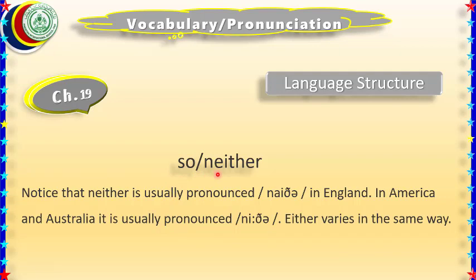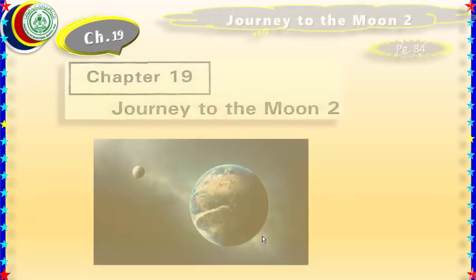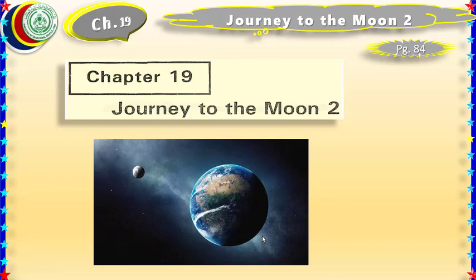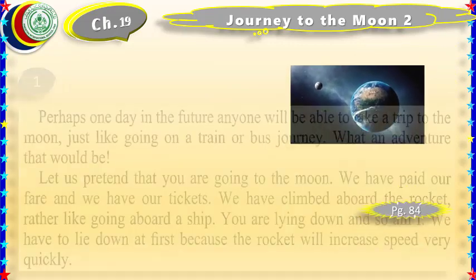Some detail is given here about the word 'neither.' Notice that 'neither' is usually pronounced 'neither' in England — in British English it is 'neither,' just like 'either.' But in America it is pronounced 'neither,' like 'either.' So there is a difference between British English and American English pronunciation for these two words.